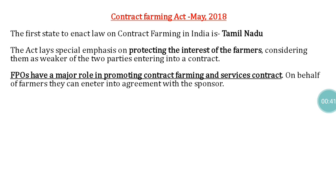Since farmers are considered the weaker party among the two parties in a contract, this Contract Farming Act was implemented to protect their interest. The Farmer Producer Organization has a major role in the promotion of contract farming and services, and they are empowered to enter into agreements on behalf of the farmers with the sponsors.